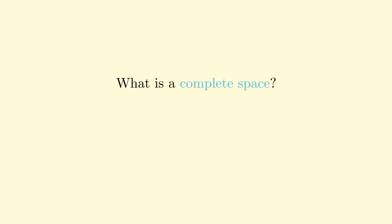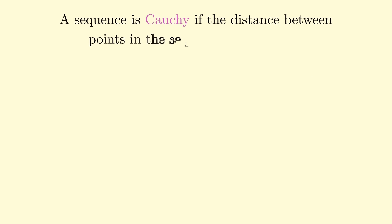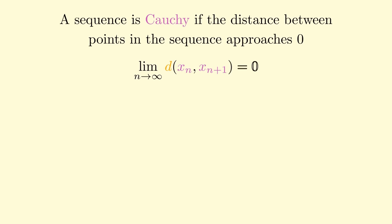Now we need to take a look at the rest of the theorem. We need to ask the question: what is a complete space? A complete space heavily relies on Cauchy sequences, so we first need to ask: what is a Cauchy sequence? A sequence of points is called Cauchy if the distance between the points in the sequence approaches 0. Formally, a sequence is Cauchy if the limit as n approaches infinity of the distance between x_n and x_{n+1} is equal to 0. Geometrically, this means that the points in the sequence eventually begin to cluster around each other.